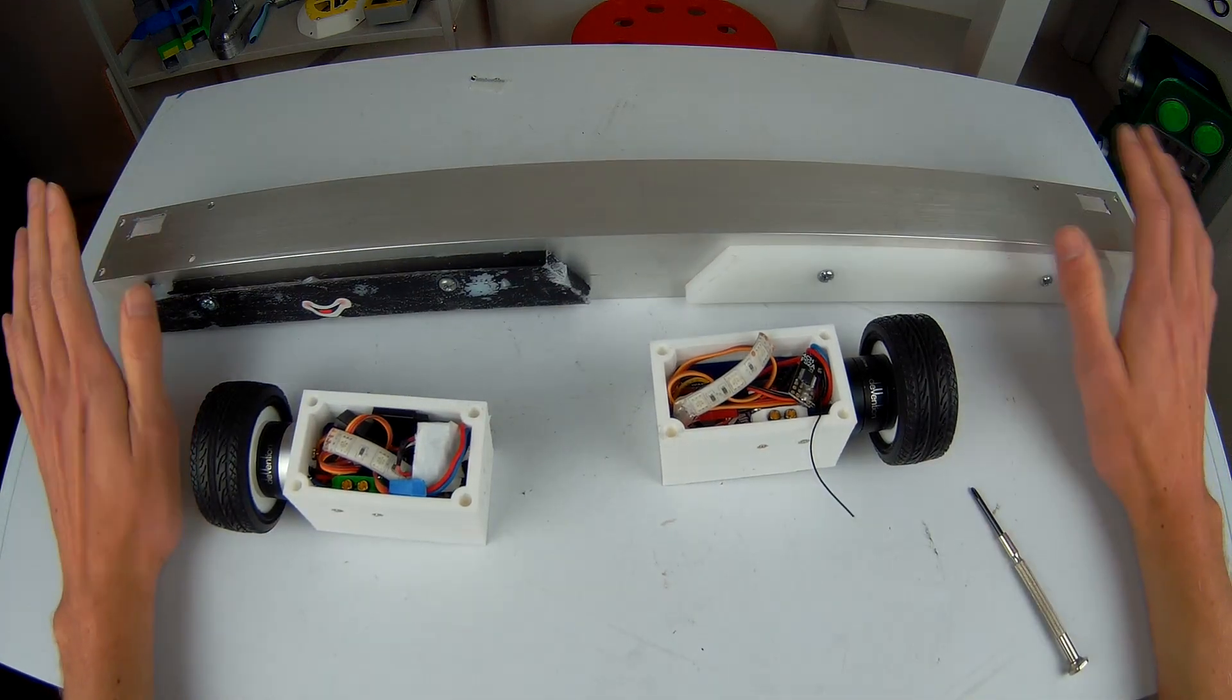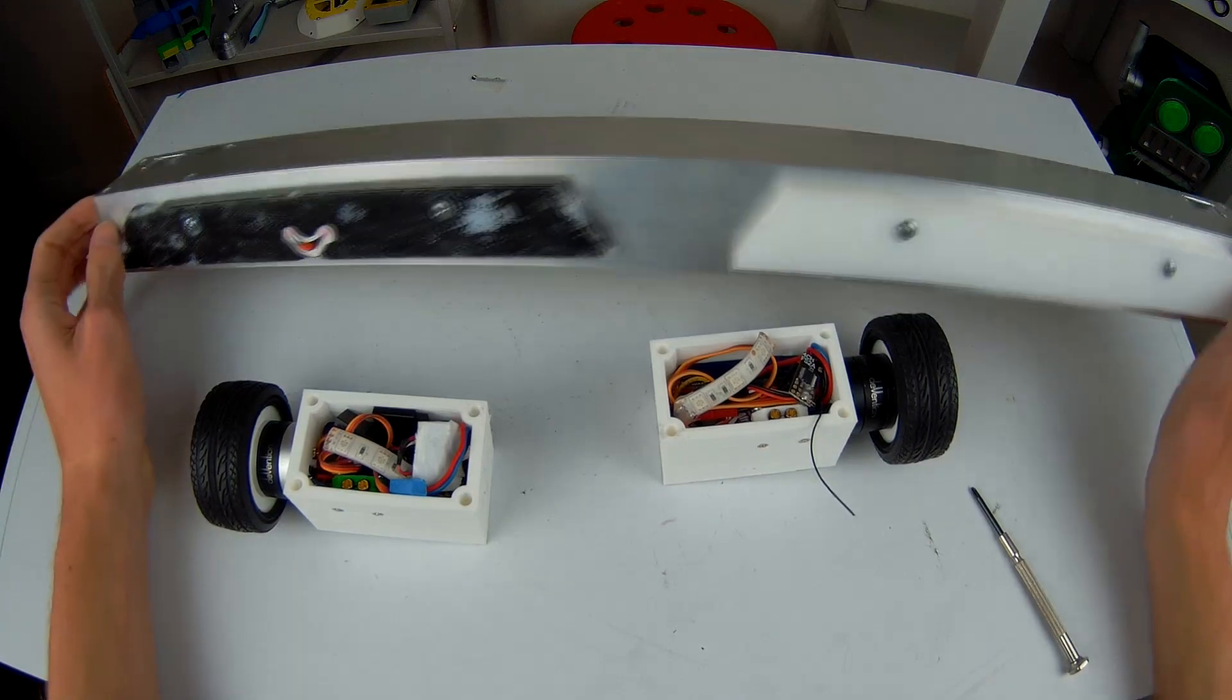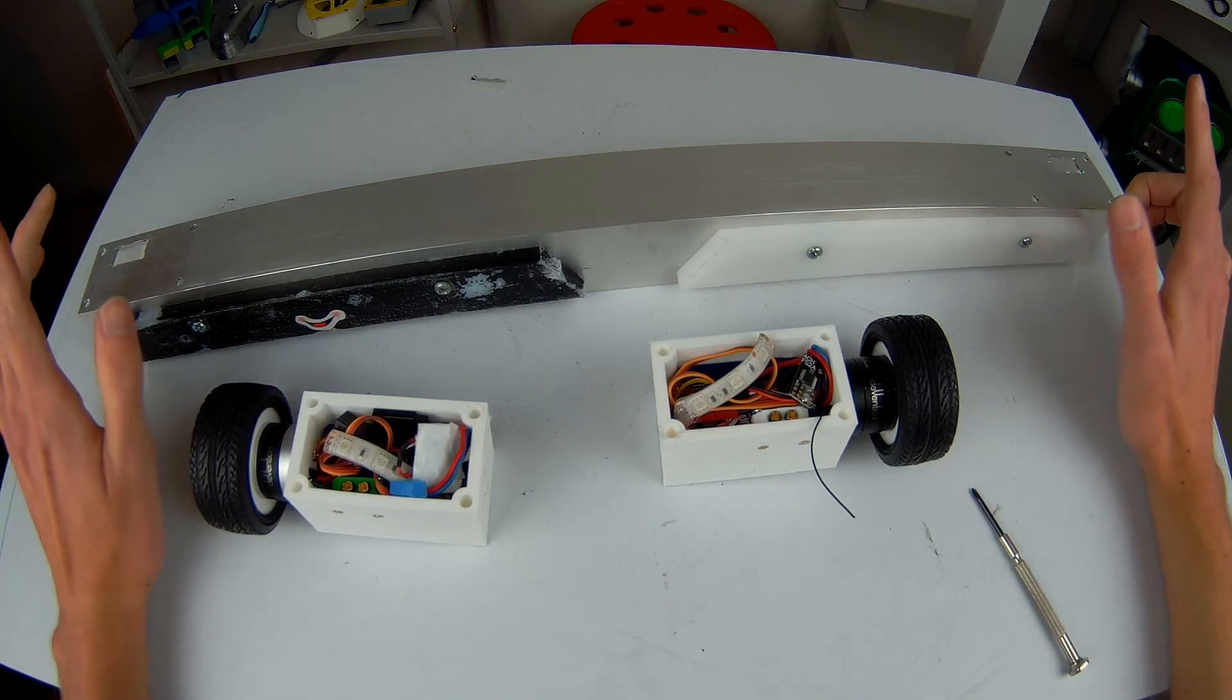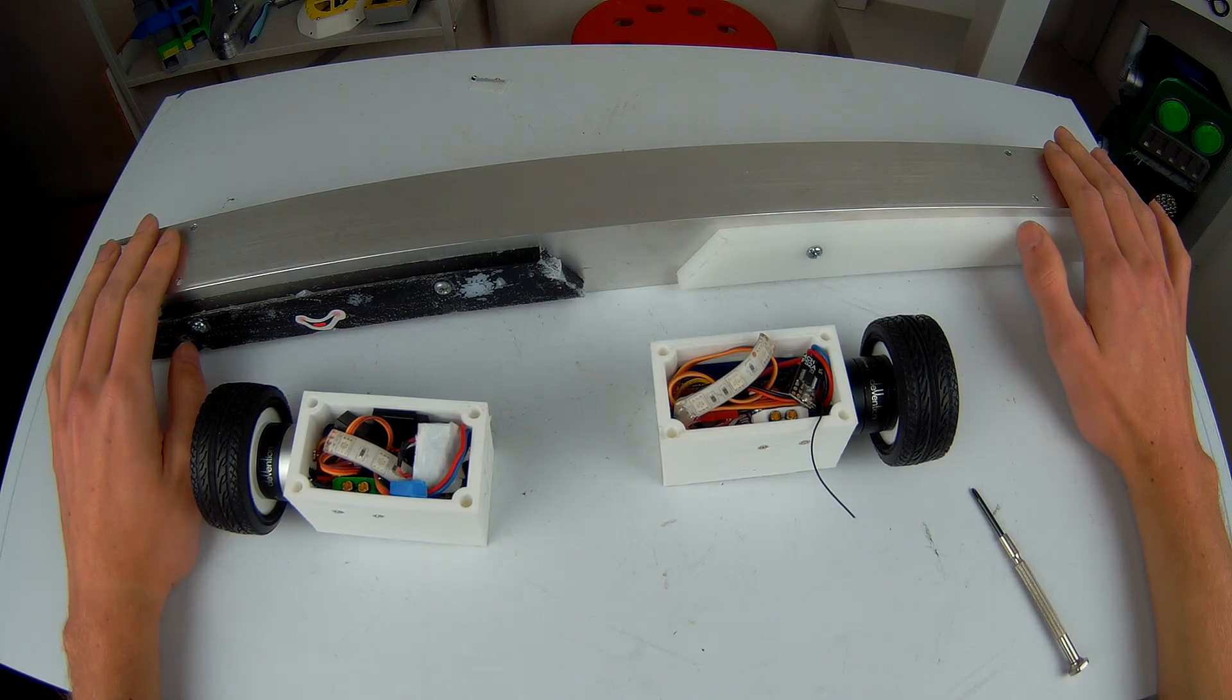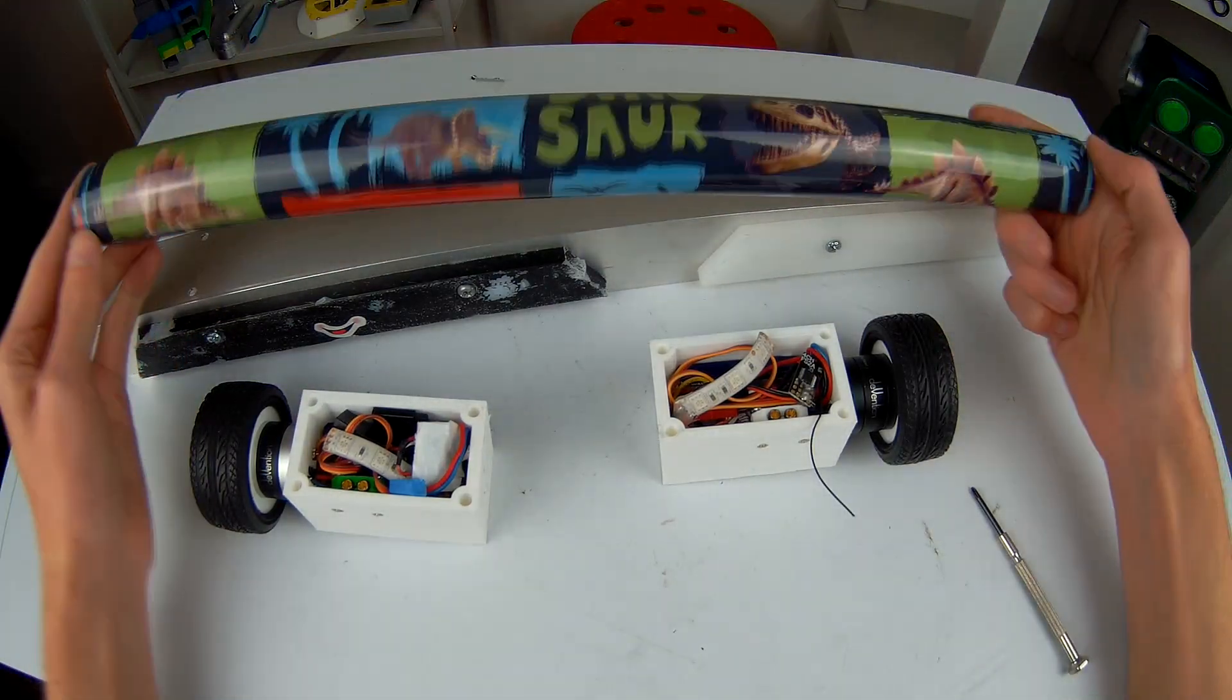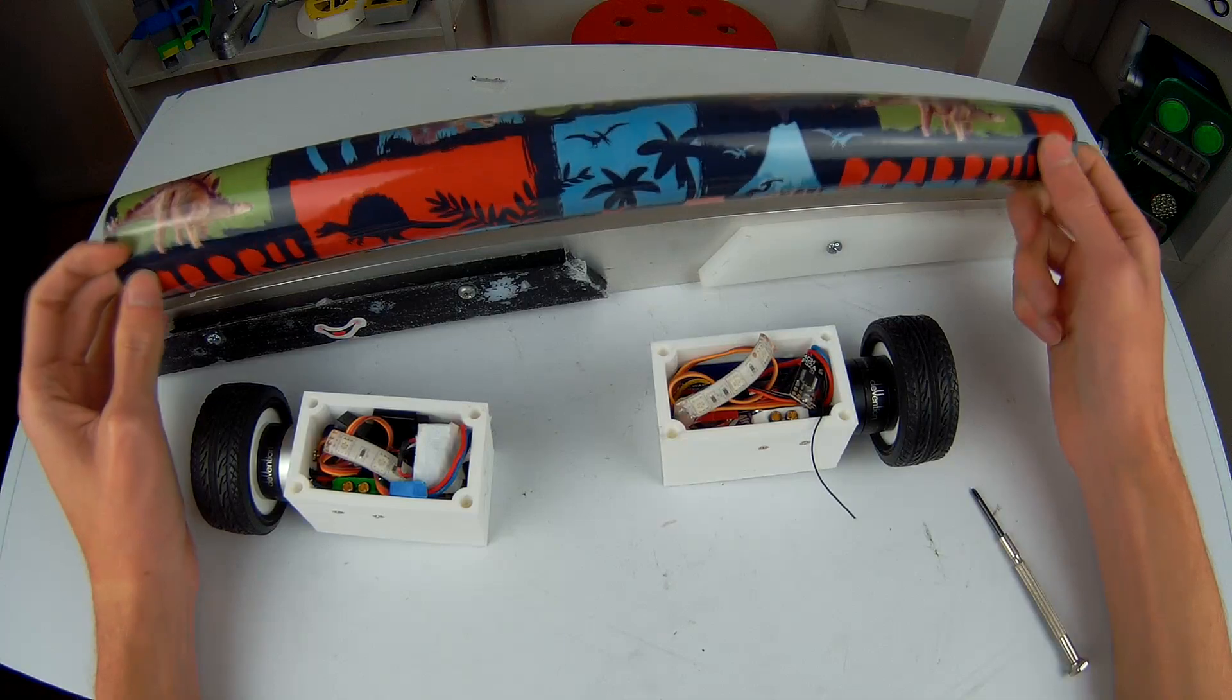Now, before we do the final assembly and the test drive, there is one thing that this needs. It needs a good look, it needs some paint or some form of coloring because at the moment this is looking pretty rubbish. So, I've decided that I'm going to try something a little bit different this time around. This is going to be a very experimental robot and today we're going to be trying book contact, specifically this dinosaur book contact.